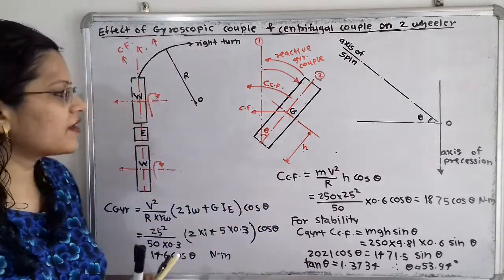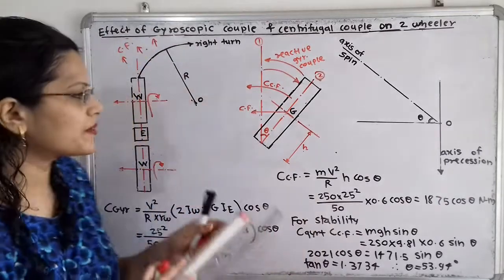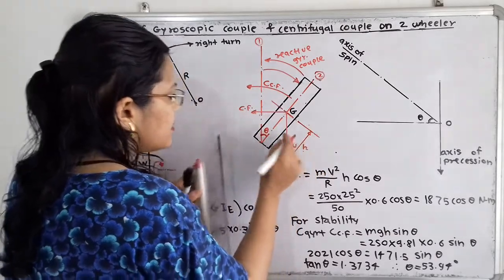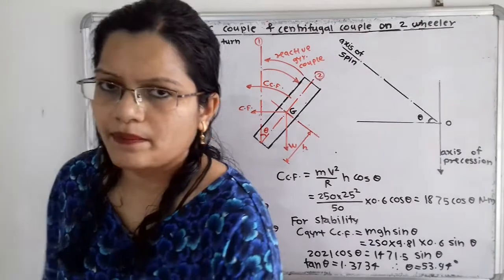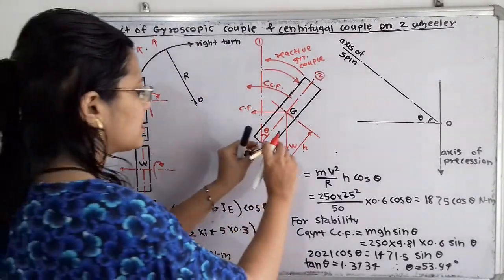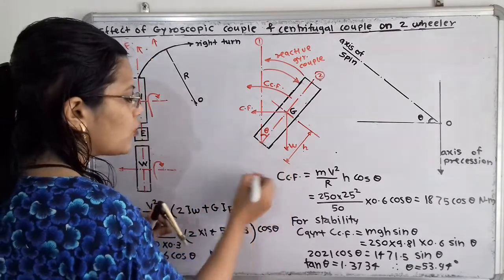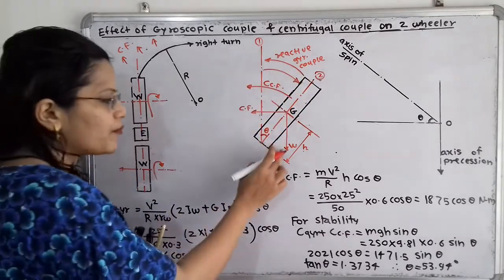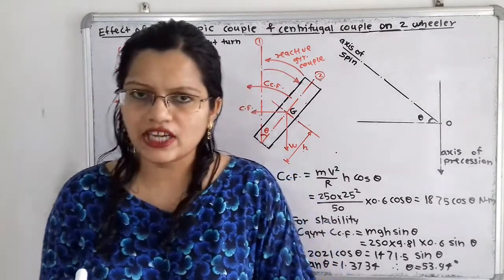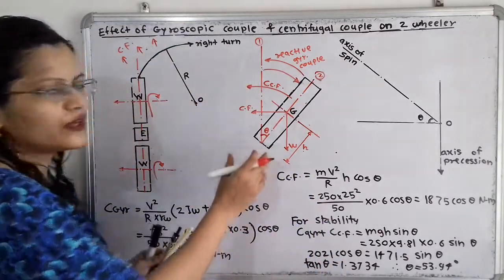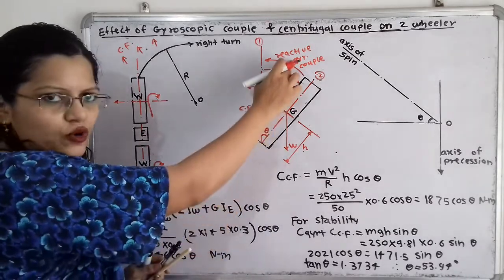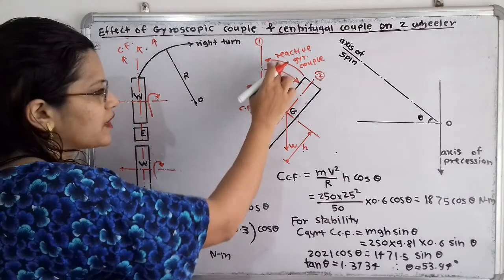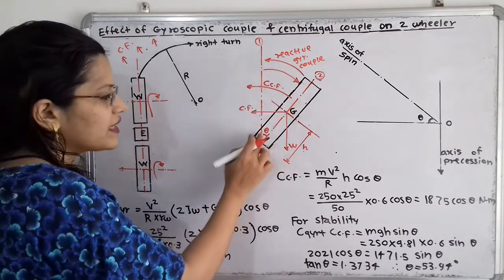There is also the weight W acting through the center of gravity point G in the vertically downward direction. Using the compass rule for W, it moves in the clockwise direction — opposite to both the centrifugal and gyroscopic couples. Because of weight W, a balancing couple is developed. For stability, we equate: centrifugal couple + gyroscopic couple = balancing couple due to weight W, which gives us angle θ.